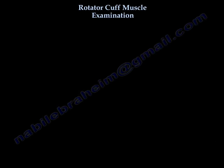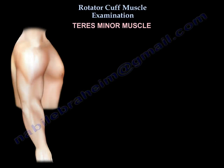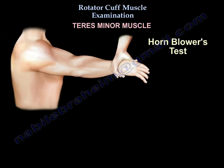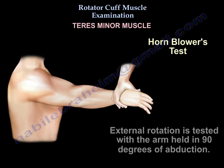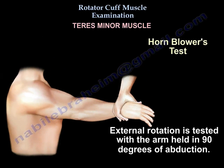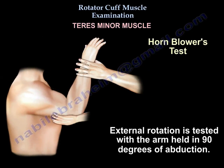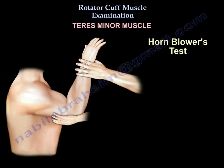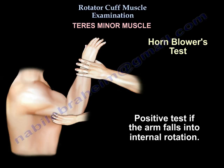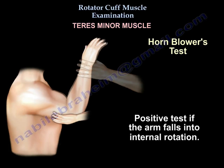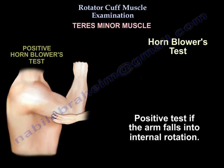The teres minor. The horn blower test. The external rotation is tested with the arm held in 90 degrees of abduction. Positive test if the arm falls into internal rotation.